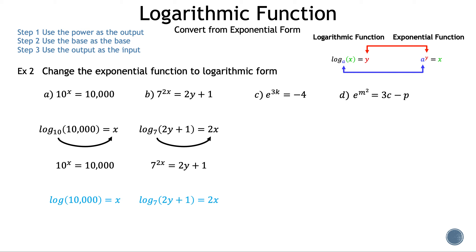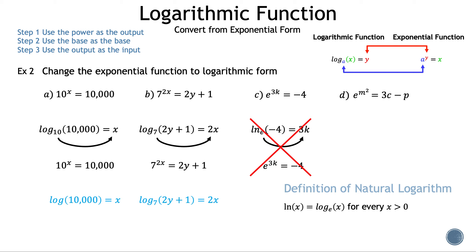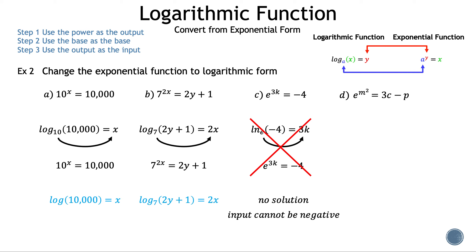Now let's move on to c: e raised to the power of 3k is equal to negative 4. The base remains the same — in this case, e. And our power, 3k, is the new output. We place in the last value we haven't used, negative 4. Let's verify by drawing the arrow from the base to the output and setting that equal to the input. We have our given, but the log form is not correct. Let's bring back the definition: the natural log of x is equal to log of x base e for every x greater than 0. The important part is for every x greater than 0, which means the input cannot be negative. Right now our input is negative 4. So the answer is no solution because the input cannot be negative.